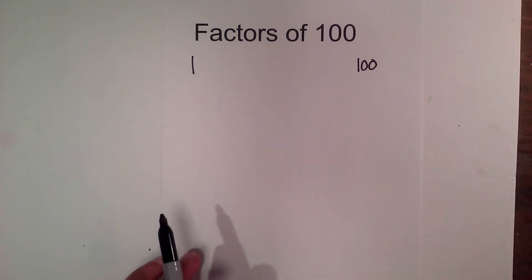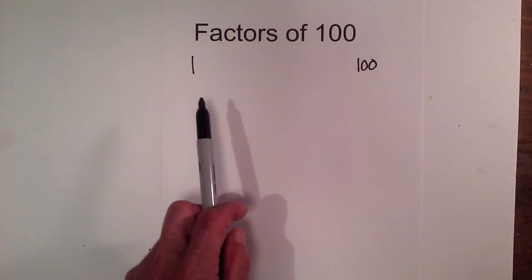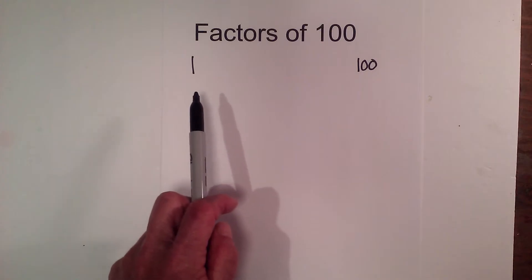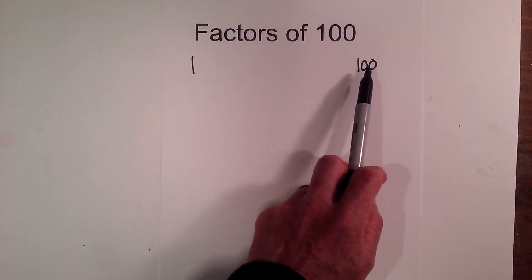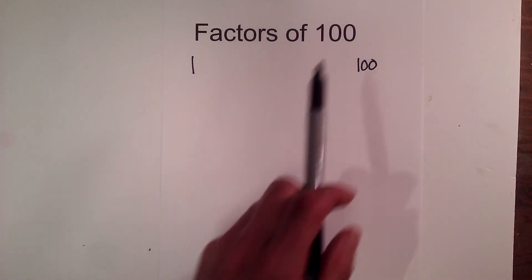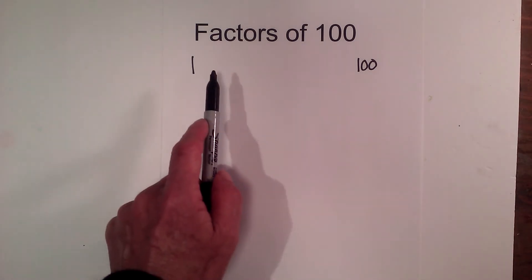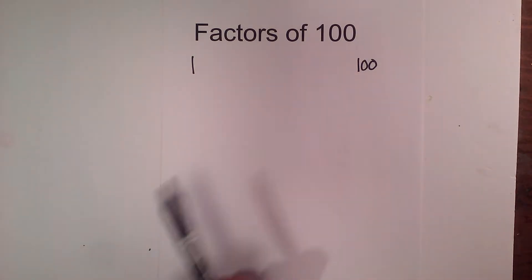In this video, let's find all the factors of 100. I'm going to use a method similar to the rainbow method. I'm going to write a 1 here and 100 over here because I know 1 times 100 equals 100, and then find all the numbers in between these two numbers that multiply together to equal 100.